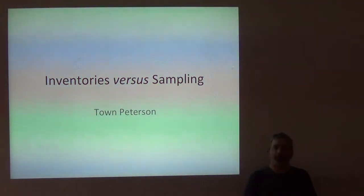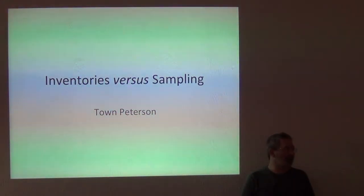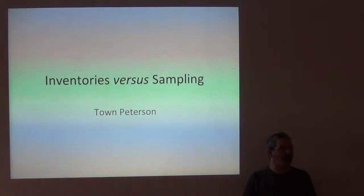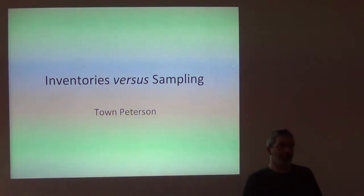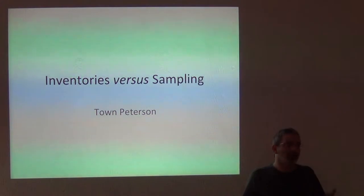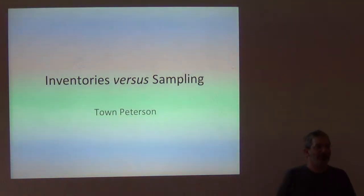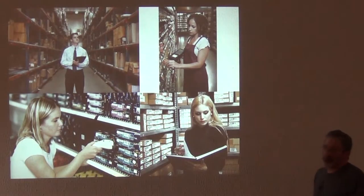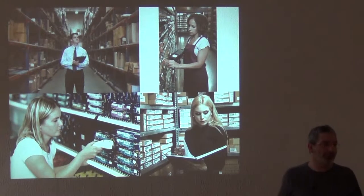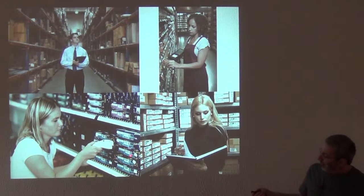If we're going to do a four-day course and then a week in the field on inventories, we should probably come to a good understanding of what an inventory is. At the outset, it sounds pretty simple — you go out into the field and you make a list, or you make a collection of all the species that are there. But there are a lot of loaded words in there. If you look for inventory on Google, you see a bunch of people walking around with data recorders. Notice that they are elaborating each item.